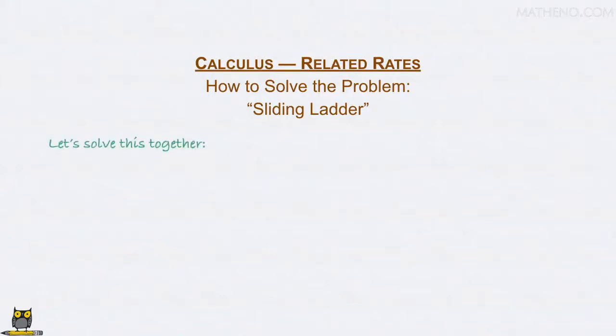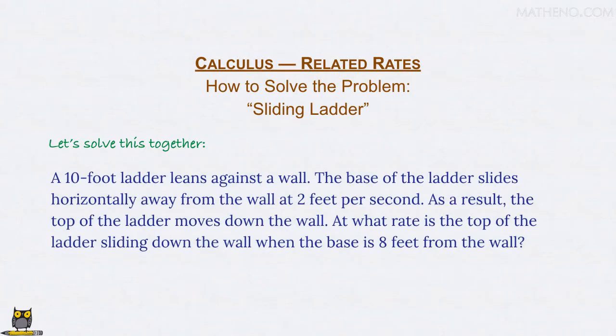We're going to solve together our next related rates problem, another classic that often appears on exams. A 10-foot ladder leans against a wall. The base of the ladder slides horizontally away from the wall at 2 feet per second. As a result, the top of the ladder moves down the wall. At what rate is the top of the ladder sliding down the wall when the base is 8 feet from the wall?